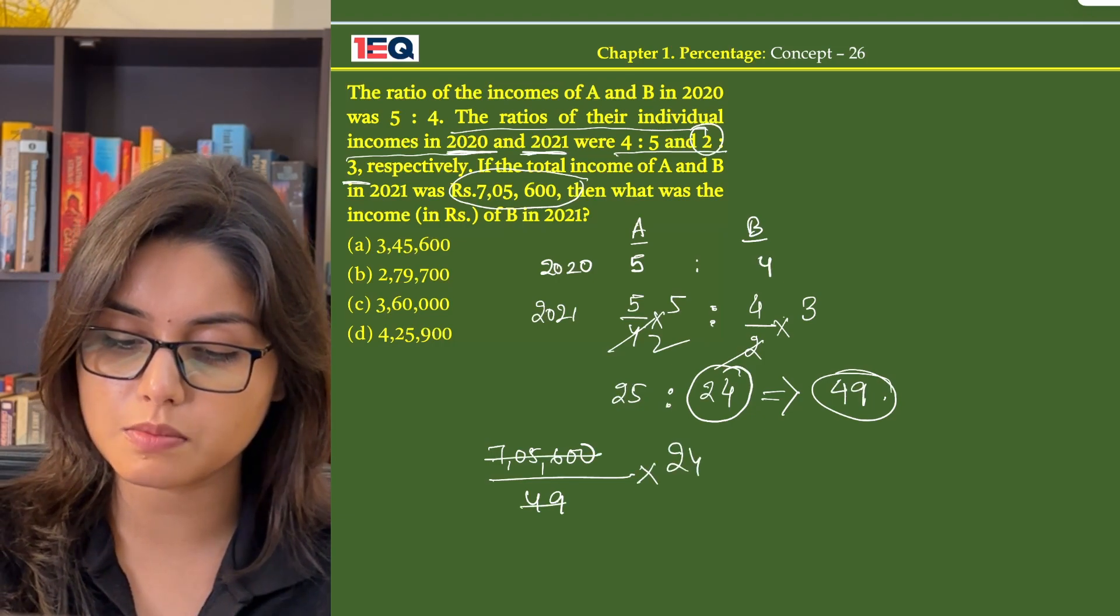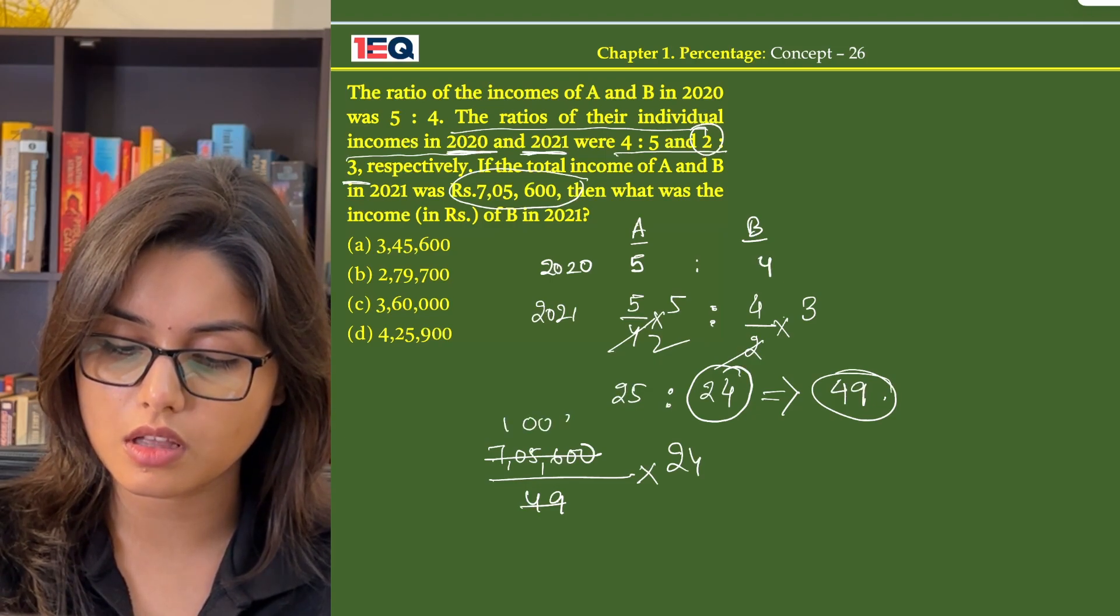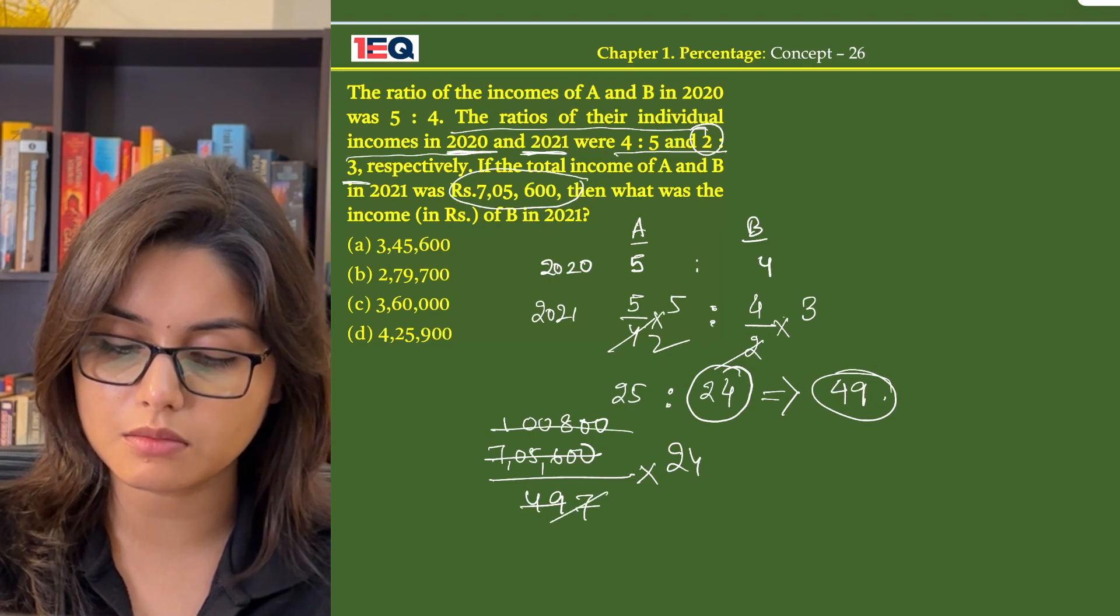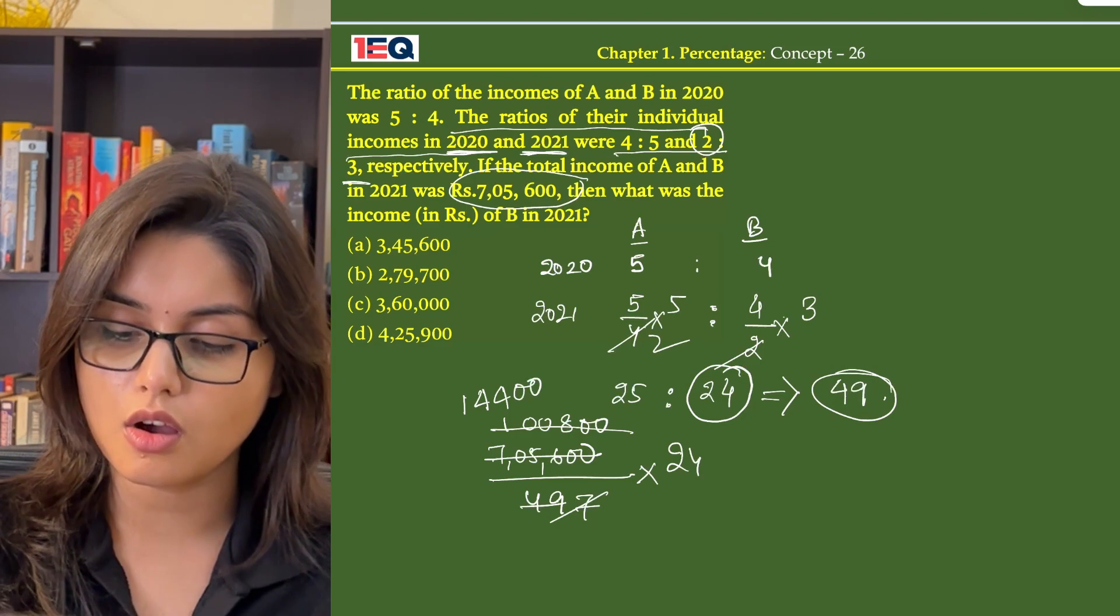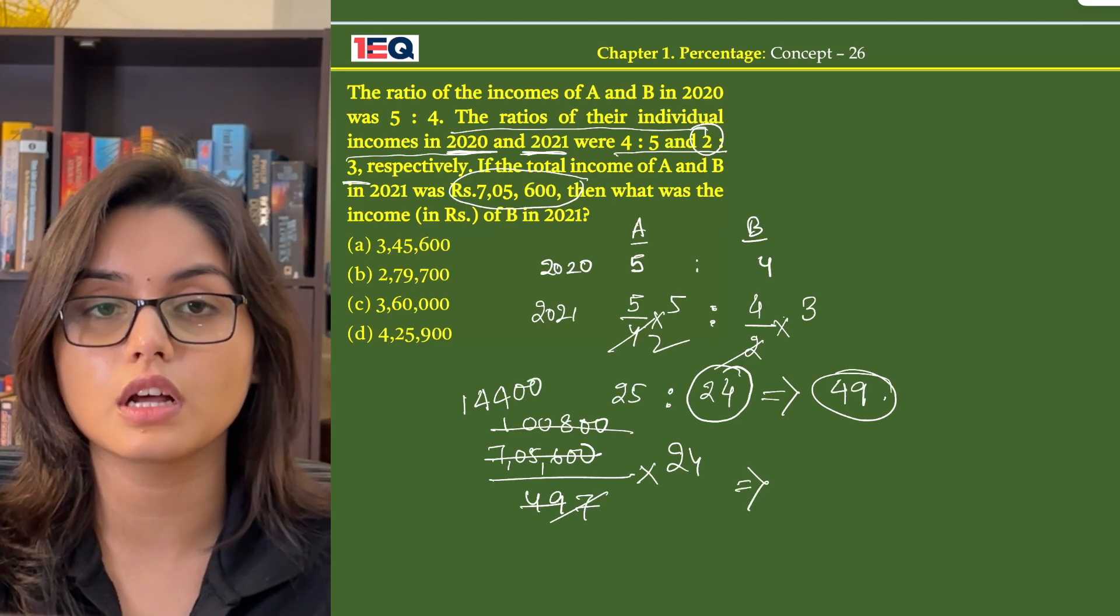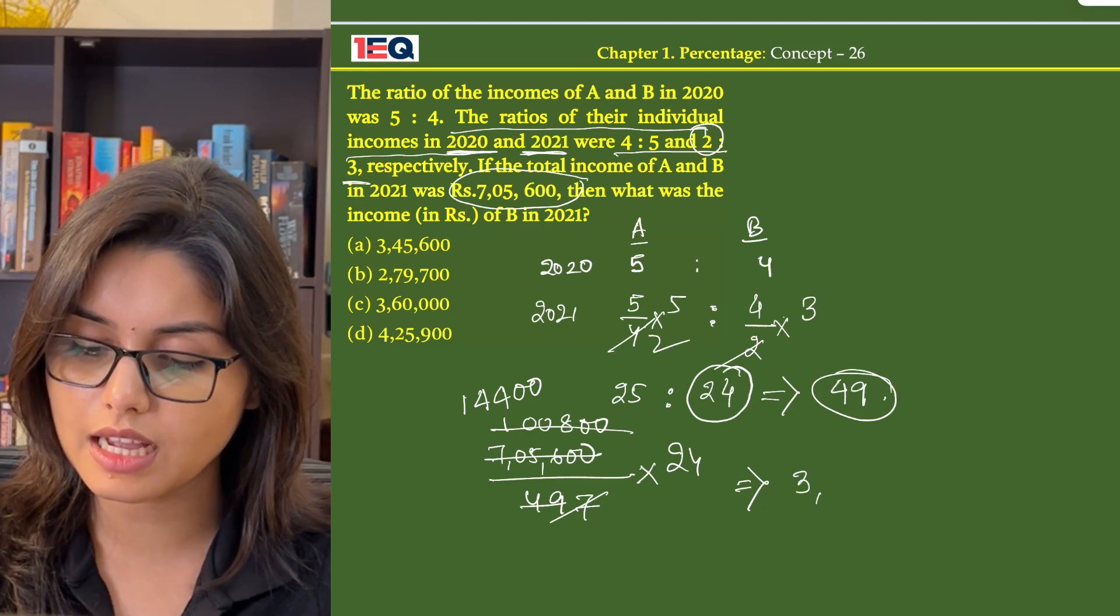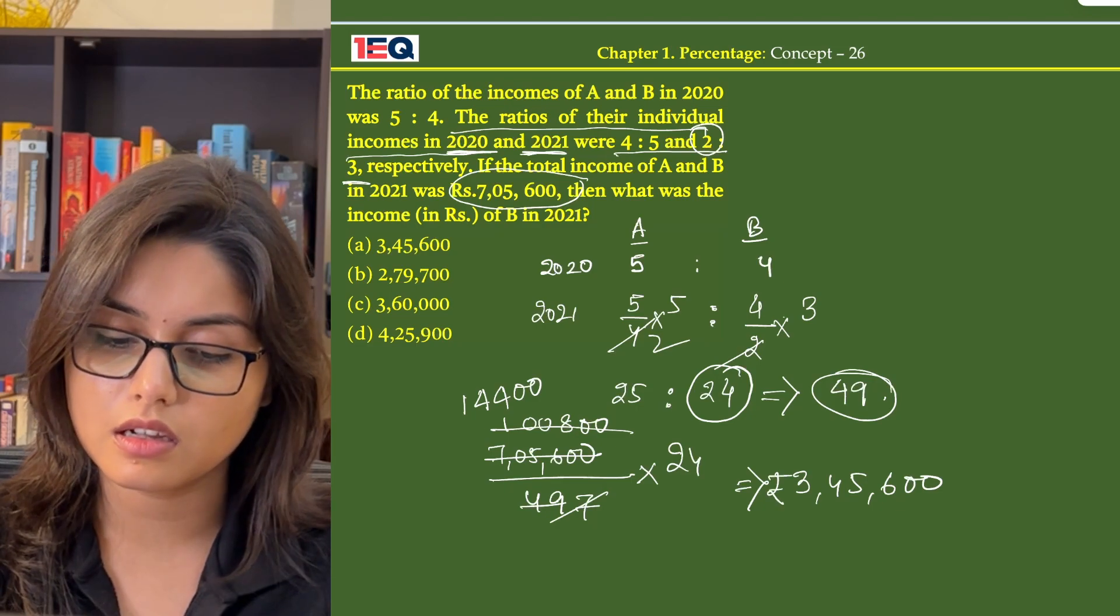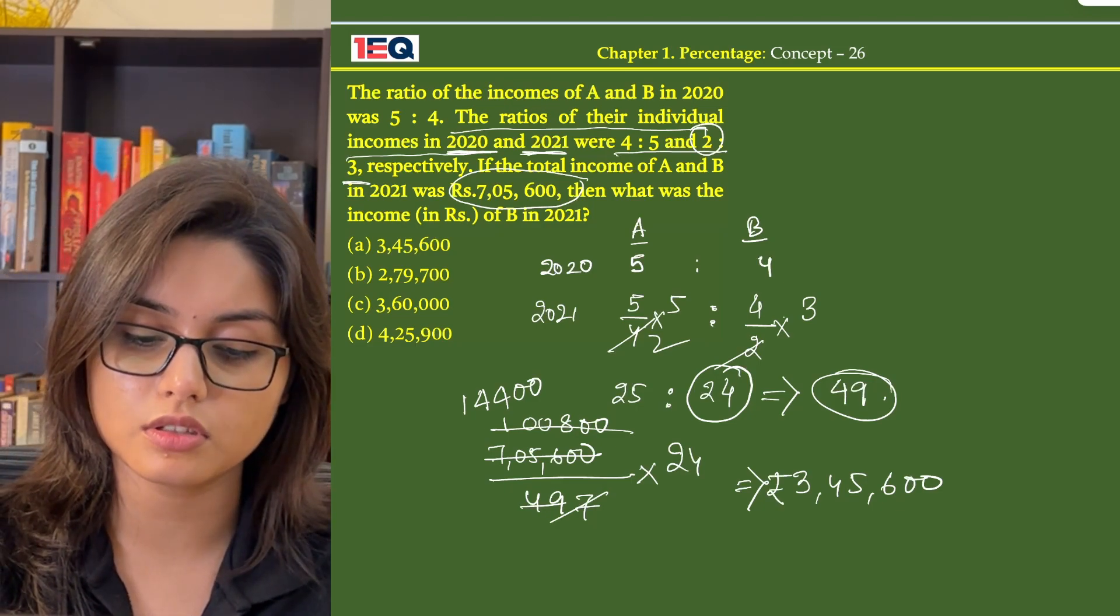Now on dividing the numbers by 7 we get 1,00,800. Again on dividing by 7 we get 14,400. Now on multiplying 14,400 by 24 we get 3,45,600 as the income of B in 2021. So the answer is option A.